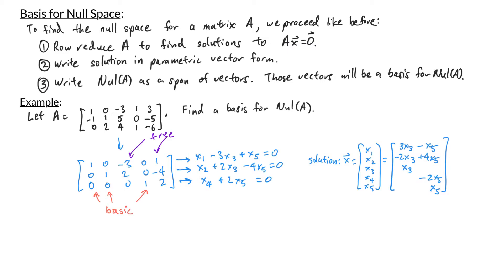Separating the vectors and factoring out the free variables, I get that this is x3 times 3, negative 2, 1, 0, 0, plus x5 times negative 1, 4, 0, negative 2, 1.